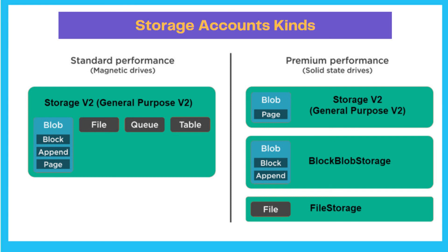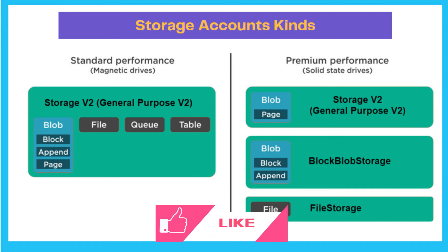There are two performance tiers: Standard (magnetic drives) and Premium (solid-state drives). In Premium, not all storage types are available. Under Premium Blob you only have Page Blob (for VM disks); for Block Blob Storage you have Block and Append; and there is File Storage — but no Queue or Table in Premium. Standard supports all storage types.